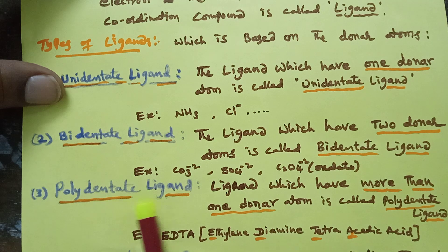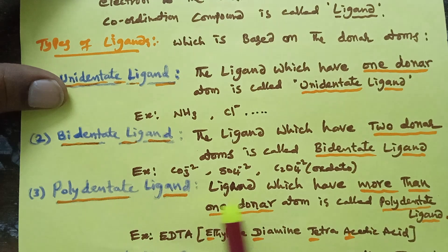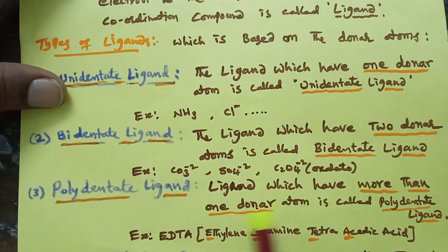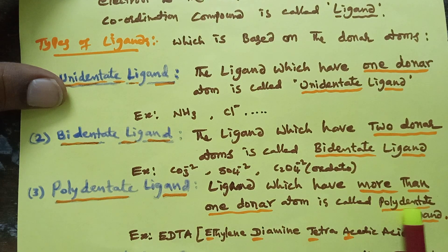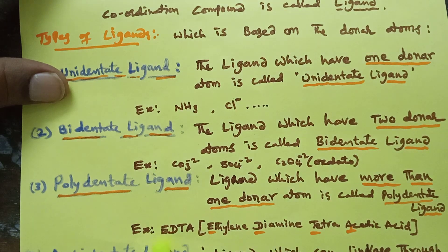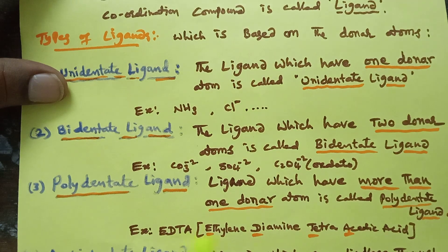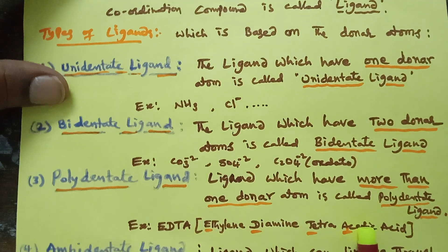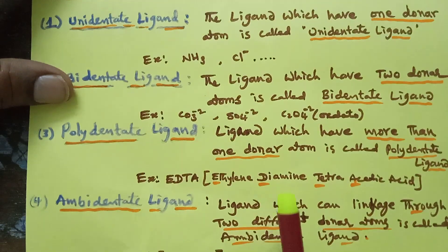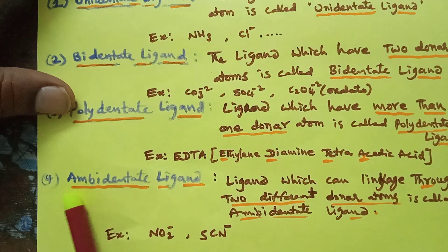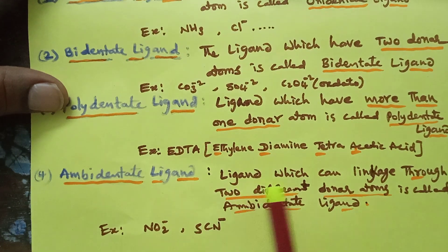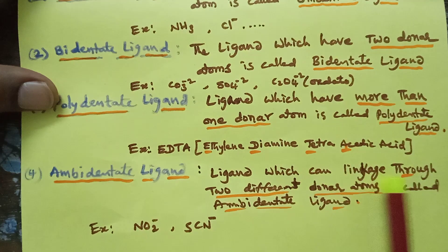The third type is the polydentate ligand. A ligand which has more than one donor atom is called a polydentate ligand. Example: ethylenediamine tetraacetic acid (EDTA) acts as a polydentate ligand.